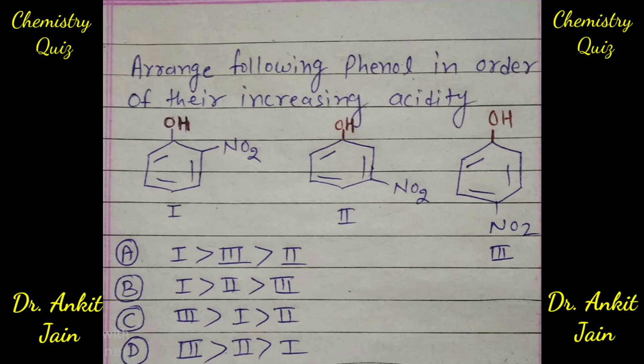So the answer will be C or D. Moving forward, comparing the first and second: the second (metanitrophenol) will have only the inductive effect, so the first (orthonitrophenol) will have more acidic character than the second. Therefore, the right option is C — that means third, then first, then second in increasing acidity.